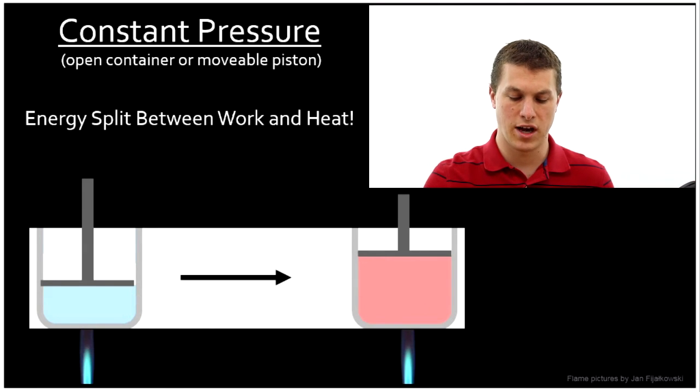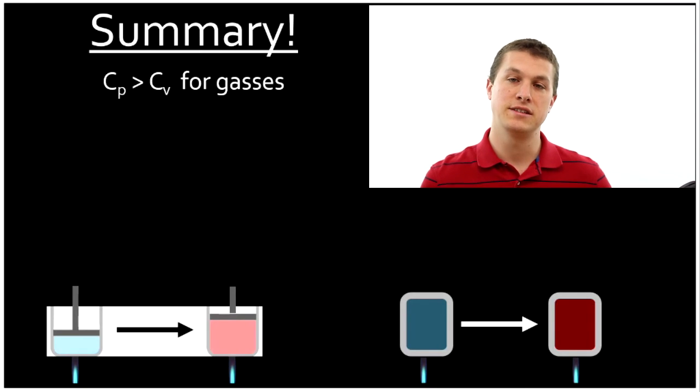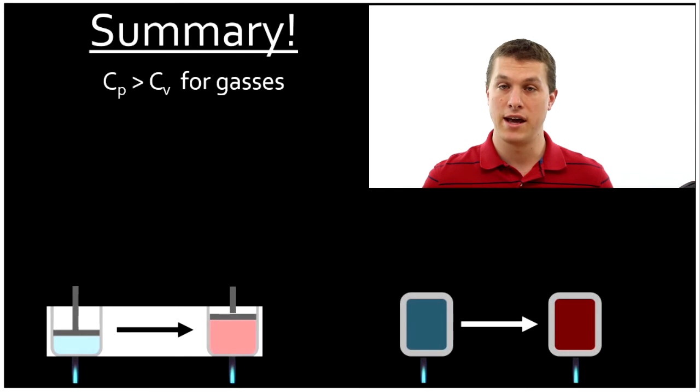So let's summarize what we've talked about. The very first thing to point out is that the heat capacity of the system at constant pressure is greater than the capacity at constant volume. That means it takes more heat to heat something up at constant pressure than constant volume. And why is that? Because at constant pressure, we're splitting our energy between heat and work. So it's going to take more energy that you add to that system to increase its temperature.